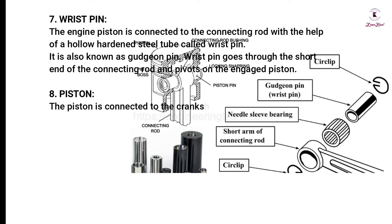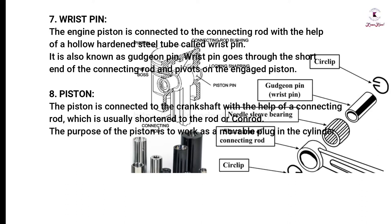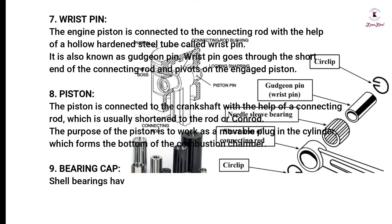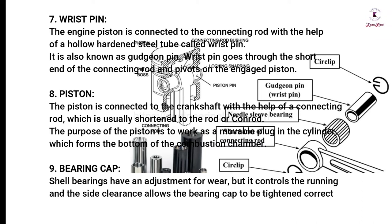Piston: The piston is connected to the crankshaft with the help of a connecting rod, which is usually shortened to the rod or con rod. The purpose of the piston is to work as a movable plug in the cylinder, which forms the bottom of the combustion chamber. Bearing cap: Shell bearings have an adjustment for wear, but it controls the running clearance, and the side clearance allows the bearing cap to be tightened correctly.